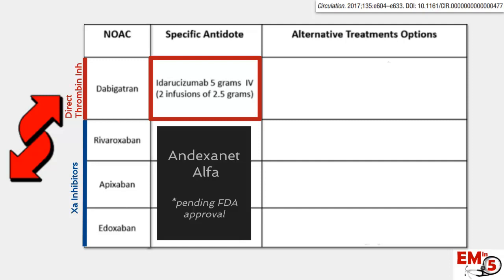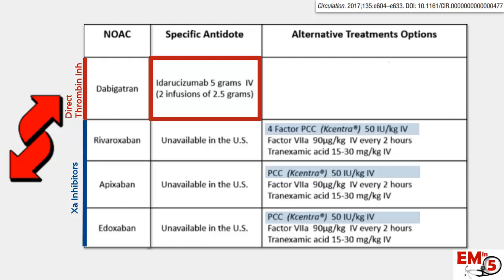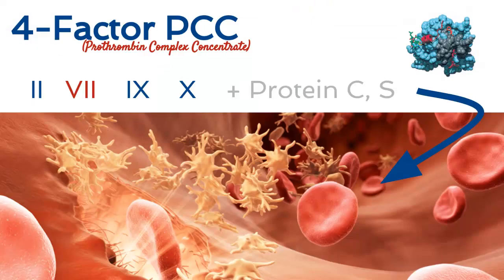There is one in the works — andexanet alfa — but it's pending FDA approval, so at least in the U.S. we don't have any available options. We have to use some different adjuncts. The one most recommended at this point is 4-factor PCC, otherwise known as Kcentra. The idea is, since we don't have anything that can directly reverse the factor Xa inhibitors, we're going to try to boost the coagulation cascade as much as we can so that hopefully a clot can form.